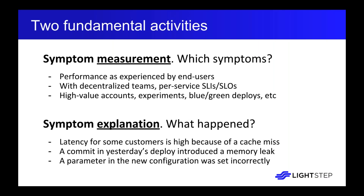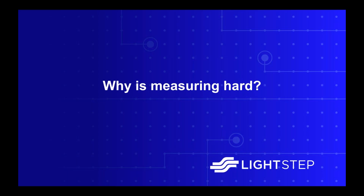The second activity is explaining — asking why something happened when one of those symptoms goes wrong. For example, latency spikes because some customers are experiencing cache misses, or a commit in yesterday's deploy introduced a memory leak, or something was wrong with the system configuration. Once you think of observability in terms of these two activities, it's easier to understand why it's difficult, because each is made very hard by the sheer volume of data people have in their system.